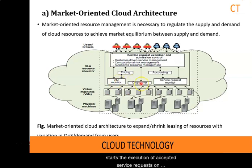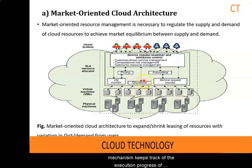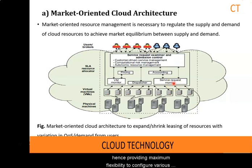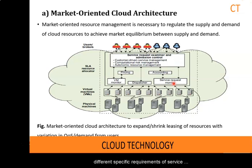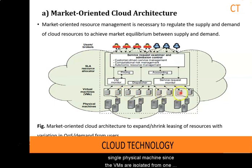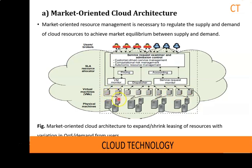The VM monitor mechanism keeps track of availability of VMs and their resource entitlement. The dispatcher mechanism starts the execution of accepted service requests on allocated VMs. The service request monitor mechanism keeps track of the execution progress of service requests. Multiple VMs can be started and stopped on demand on a single physical machine to meet accepted service requests, providing maximum flexibility to configure various resource partitions to different specific requirements. Multiple VMs can also concurrently run applications based on different operating system environments on a single physical machine, since the VMs are isolated from one another.